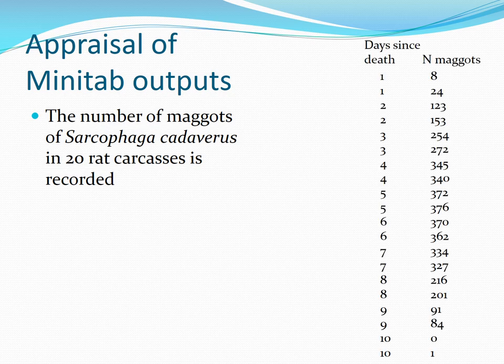We've got two variables: days since death and the number of maggots. The number of maggots is the response variable, and days since death is the predictor. We're thinking that the number of maggots on that decaying rat carcass is dependent on time since the death of the rat. Truly charming research.